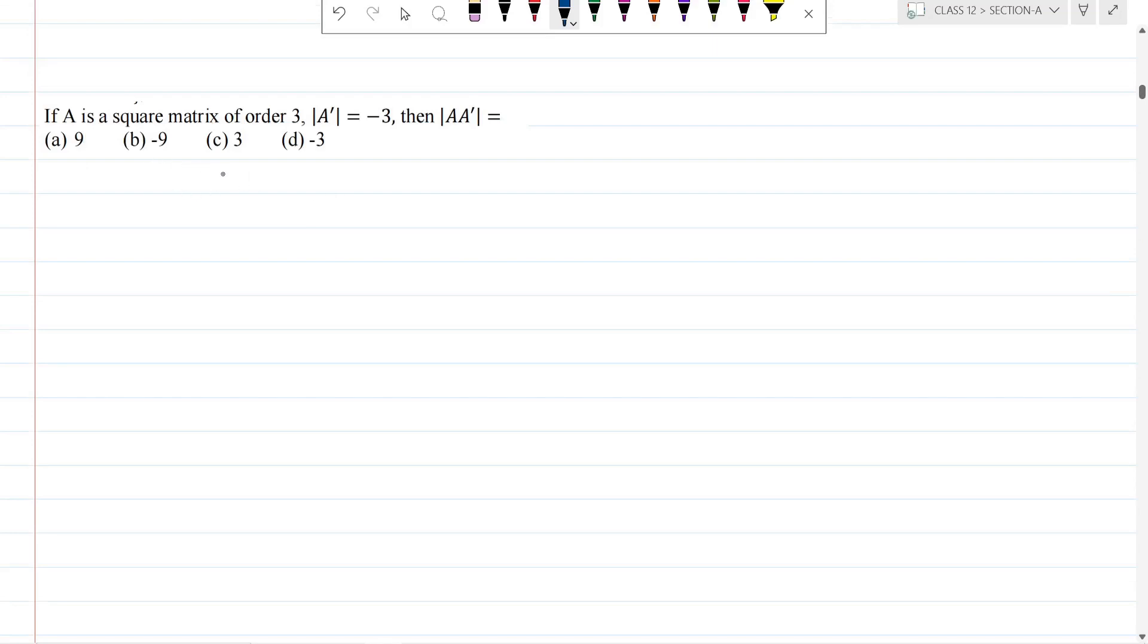If A is a square matrix of order 3 and determinant of A' (that is A transpose) is equal to minus 3, then what is the determinant of A times A transpose? Take it as a note.